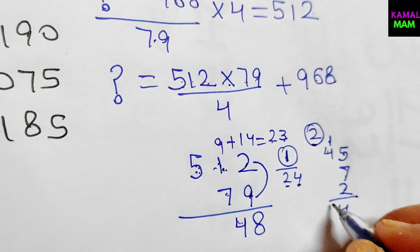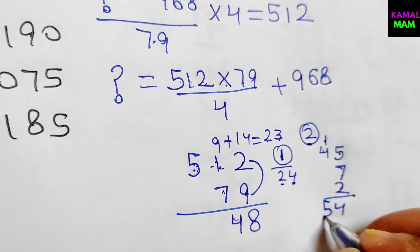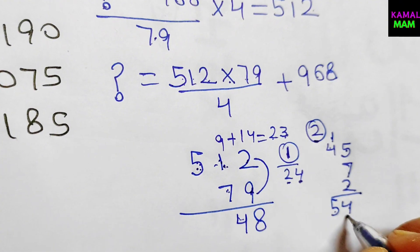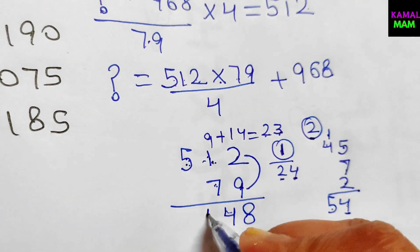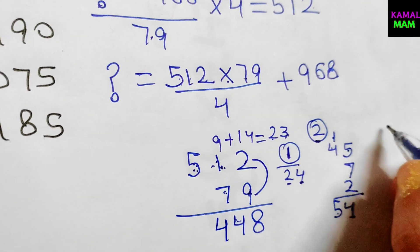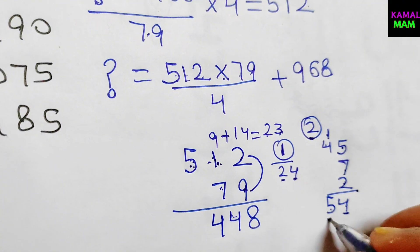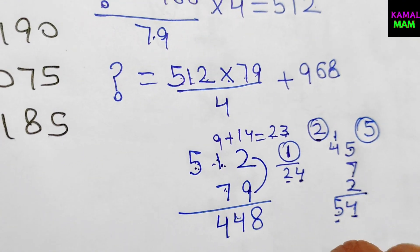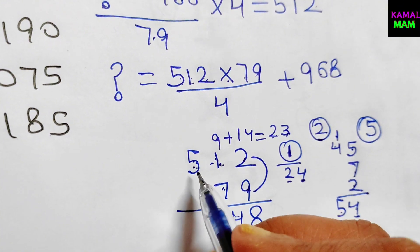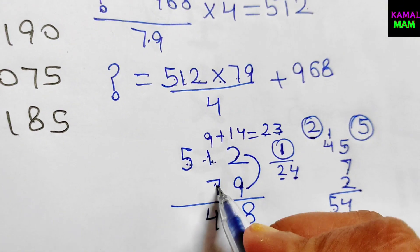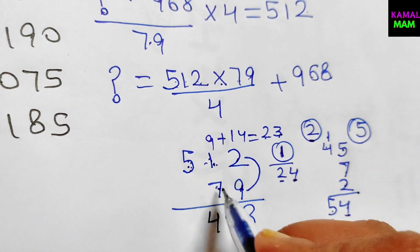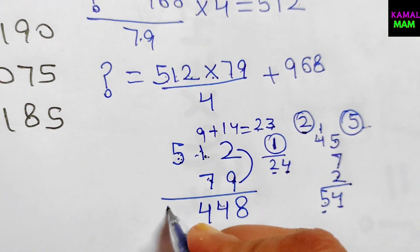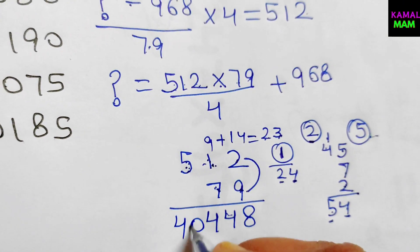Write down the last digit 4 and carry 5. In the last step: 5 times 7 is 35, then 35 plus 5 is 40. So we get 40448 as the result of 512 multiplied by 79.